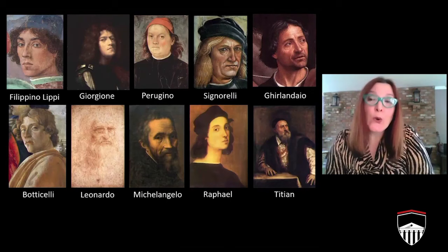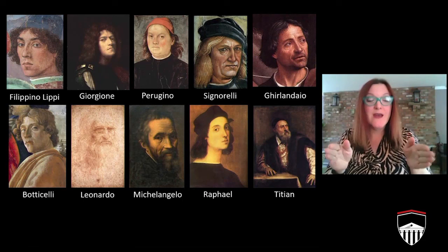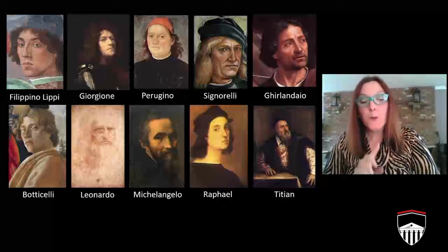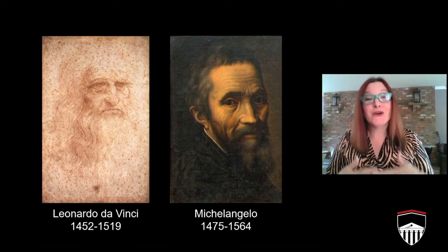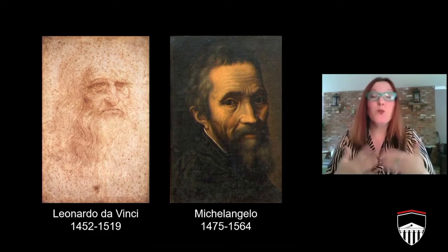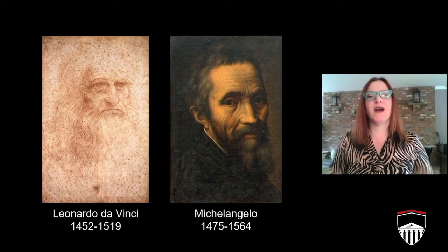We know more artists' names who lived in the 15th century than we do for the entire history of art up until that point, but only to a few do we give the title of genius. Chief among these, you might think of Leonardo da Vinci, or his younger contemporary and sometimes rival, Michelangelo Buonarroti. One of the reasons we consider them geniuses is because these are artists we categorize as universal men — artists who were gifted in more than one discipline.